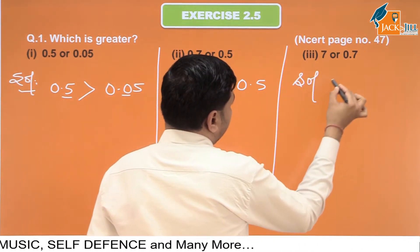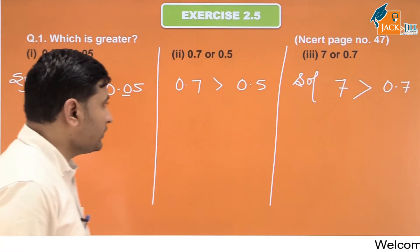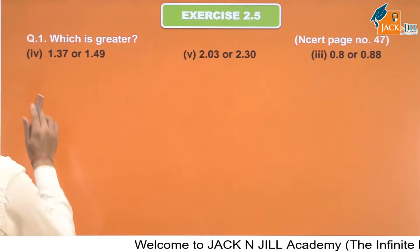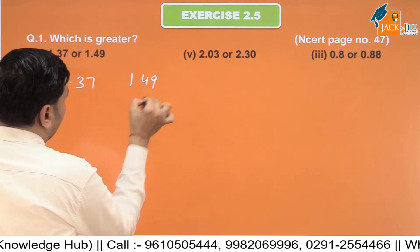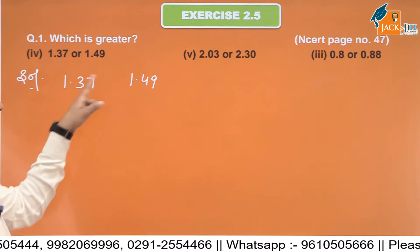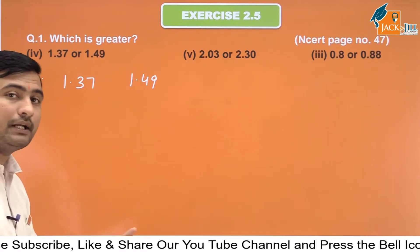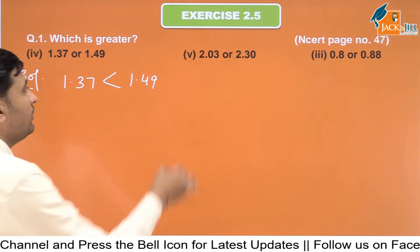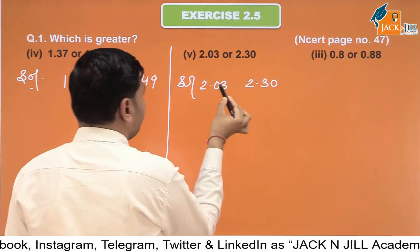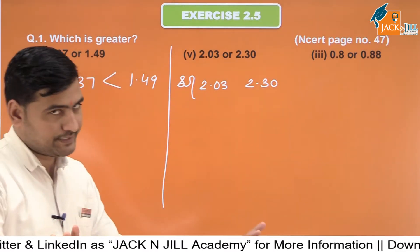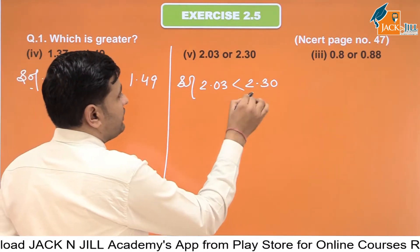यहाँ पर whole number है और 0.7 decimal number है, तो obviously हमारा whole number बड़ा हो जाएगा। फिर 1.37 और 1.49 में decimal से पहले दोनों में 1 ही है, same है। Decimal के बाद पहला number यहाँ 3 है यहाँ 4 है, तो 4 बड़ा है तो 1.49 बड़ा हो जाएगा। फिर 2.03 और 2.30 में decimal से पहले दोनों में 2 आ रहा है। Point के बाद यहाँ 0 है यहाँ 3 है, तो 3 बड़ा, तो 2.30 बड़ा हो जाएगा।